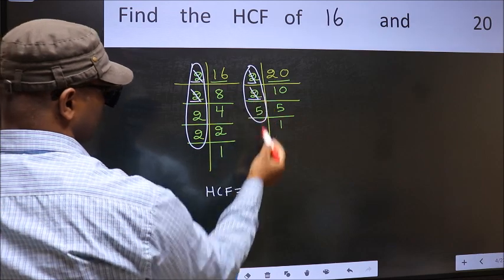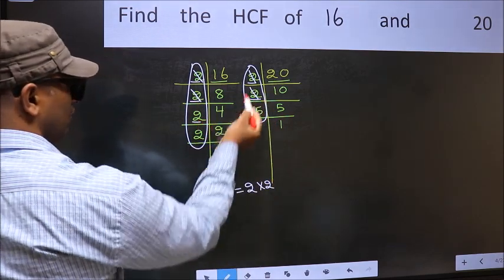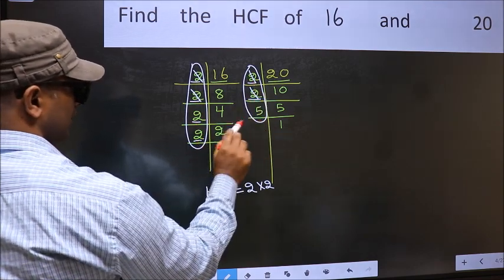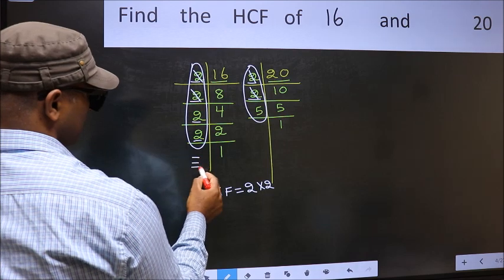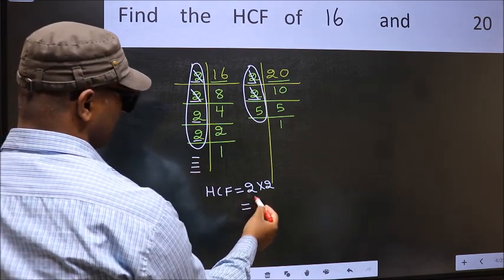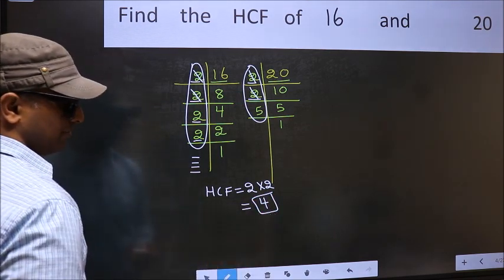Next number 2. Do we have 2 here? No. No more numbers have been left out. So our HCF is 2 times 2. 4 is our HCF.